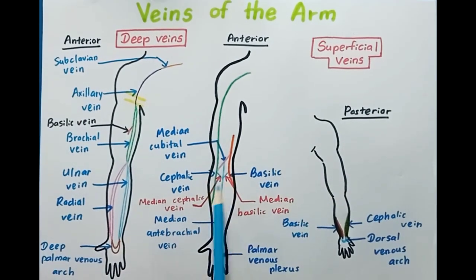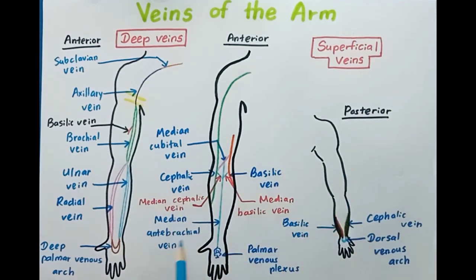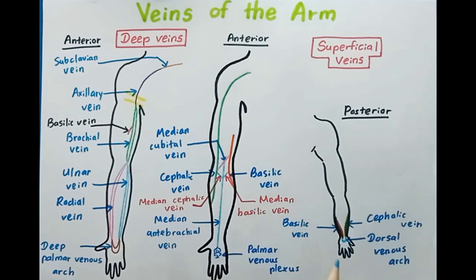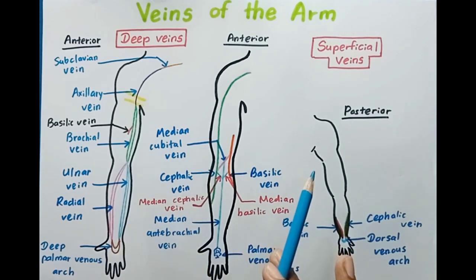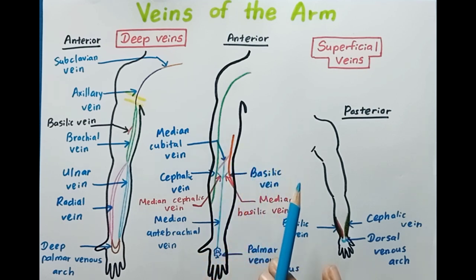In this situation the median cubital vein is absent. Remember that when the median antebrachial vein divides into the median cephalic vein and median basilic vein, the median cubital vein is absent. If you liked this video please hit the like button and don't forget to subscribe to my channel. Thank you guys.